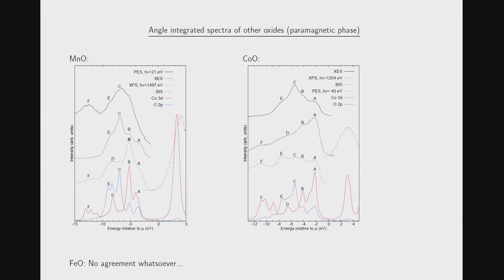Results for manganese oxide and cobaltous oxide show again quite good agreement: hard X-ray photoemission compared to the calculated nickel/cobalt density of states shows the correct sequence of peaks, the resonantly enhanced satellite is at the right position, and XES compared to the oxygen density of states also matches reasonably well. Of course this was done by adjusting two parameters, so this is maybe not that much of an achievement.